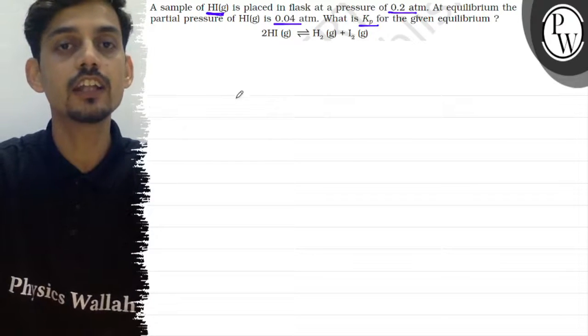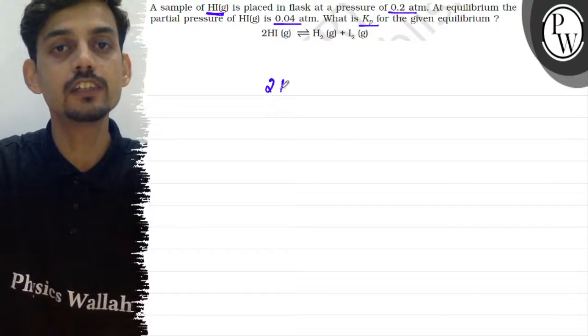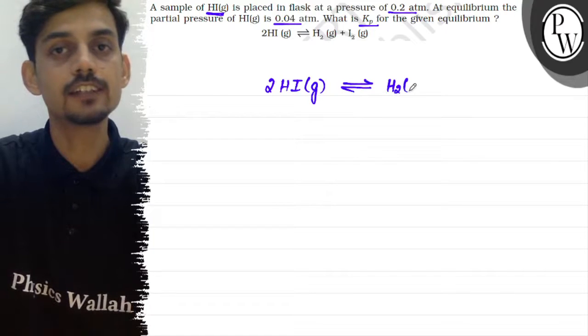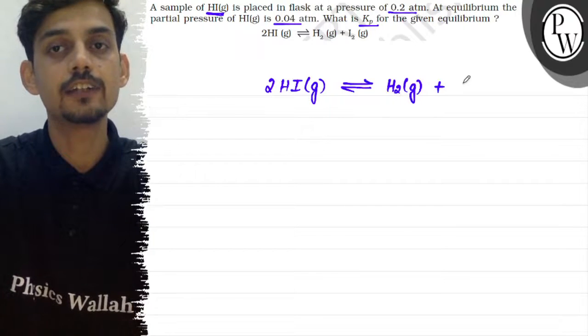What is Kp for the given equilibrium? The reaction given to us is 2HI gas reversibly gives H2 gas and I2 gas.